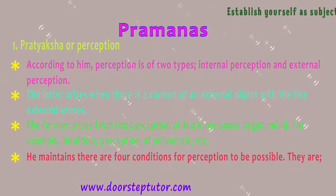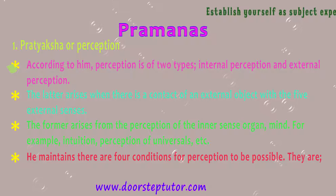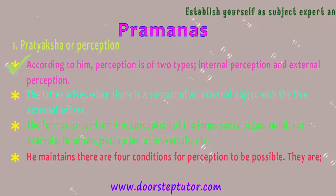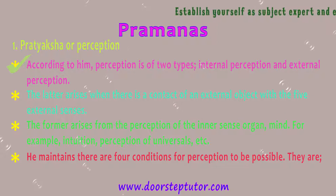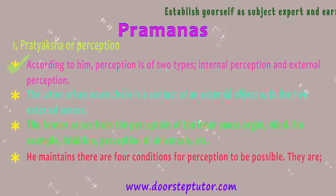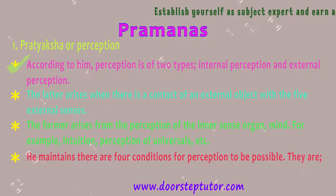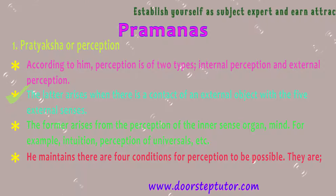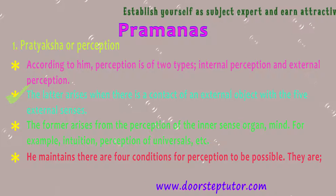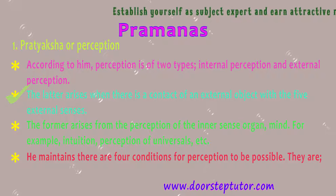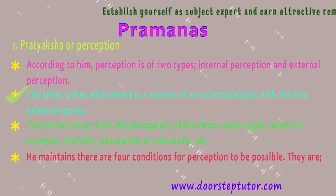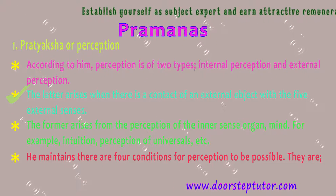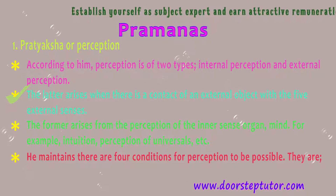Number 1: Pratyaksha, or Perception. According to Shankara, perception is of two types: internal perception and external perception. External perception arises when there is a contact of an external object with the five external senses.